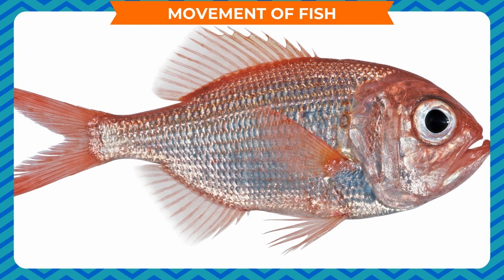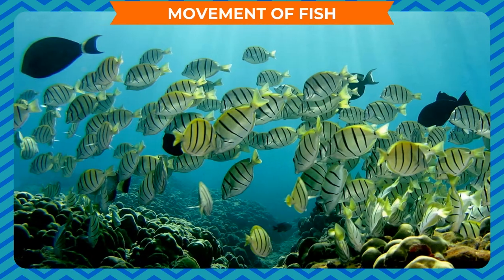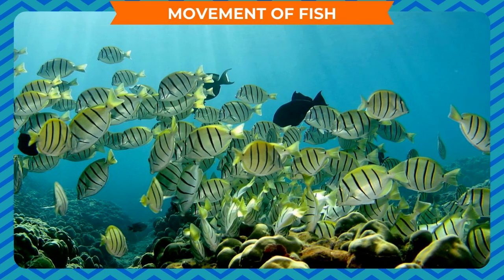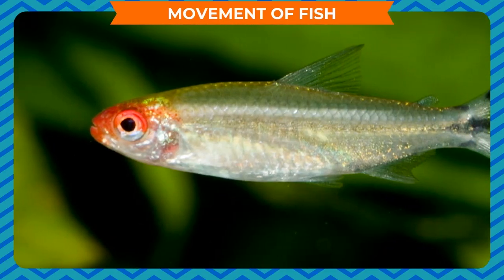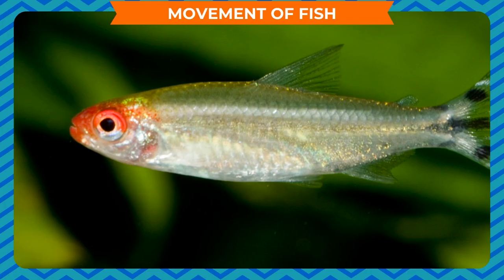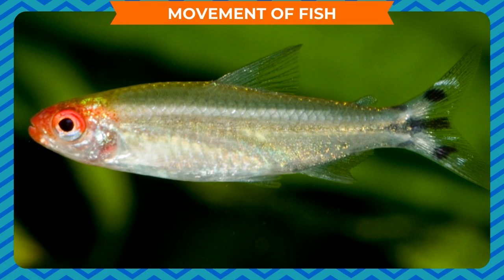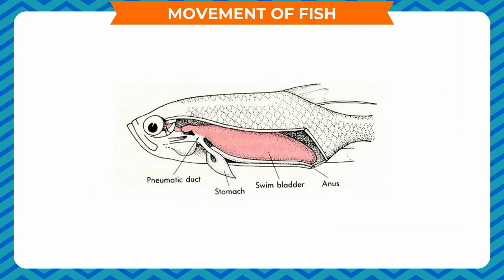Movement of fish: Fish have a streamlined body which offers the least resistance while swimming in water. Fish have fins and a flexible backbone that help in swimming. They have special structures called swim bladders that can be filled with air or emptied to help them move up and down in water.